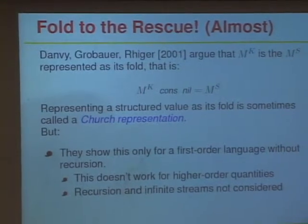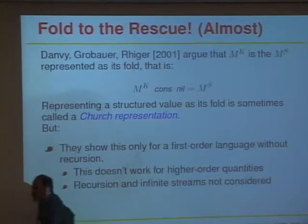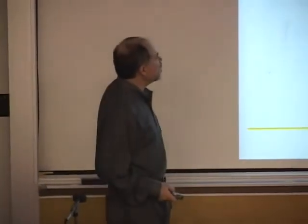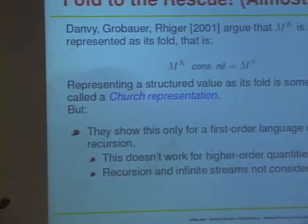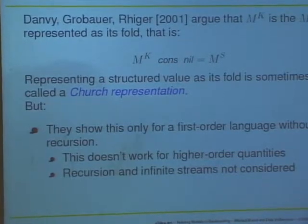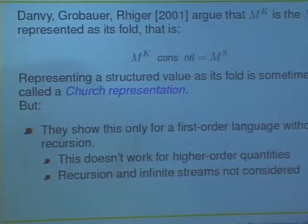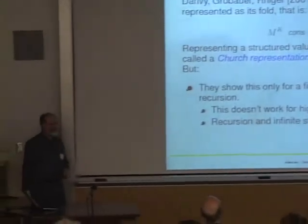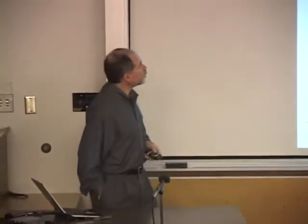What's the best prior work on this subject? The best work was by Danvy, Grobauer, and Rieger in 2001. They said the continuation-oriented value can be seen as the fold of the stream: if you take the continuation model and use cons for the success continuation and nil for the failure continuation, you get the stream back — sometimes called the Church representation. Unfortunately, their result had some limits: it was only good for a first-order language without recursion — no higher-order types, no infinite streams.